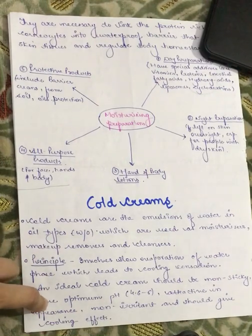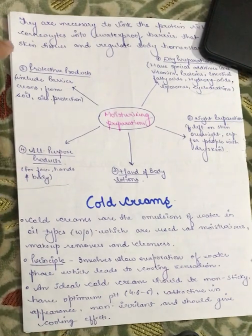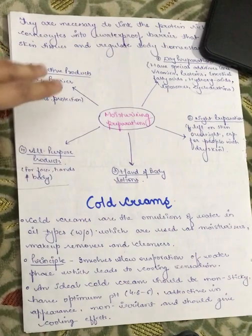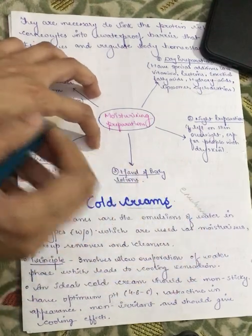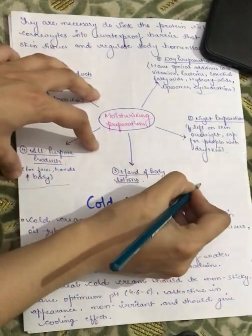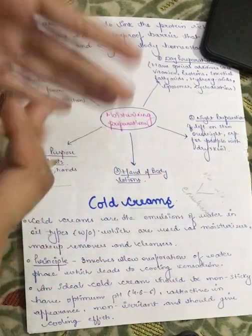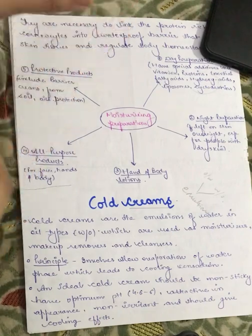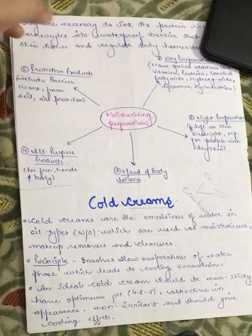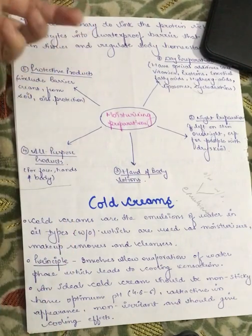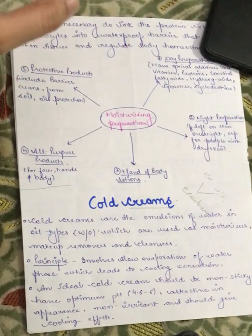In this video we are going to study about cold creams. There are two types of creams: cold cream and vanishing cream. These creams are mostly emulsions. There are two types of emulsions: oil-in-water or water-in-oil. Emulsions are a combination of oil and water — since oil and water cannot be mixed on their own, when we mix them with an emulsifier, the resulting formulation is called a cream.